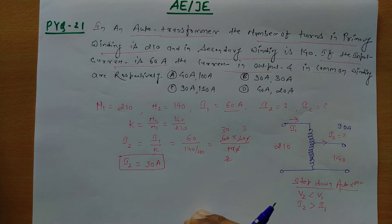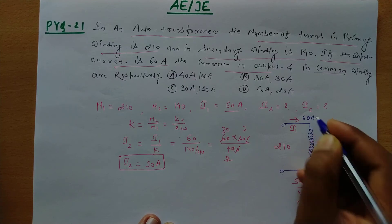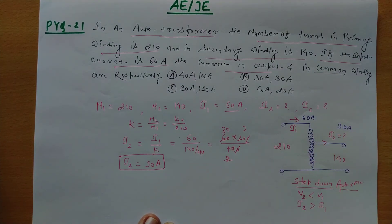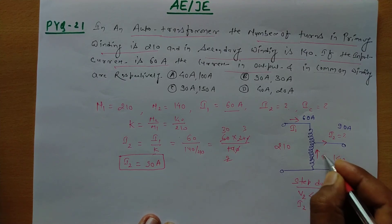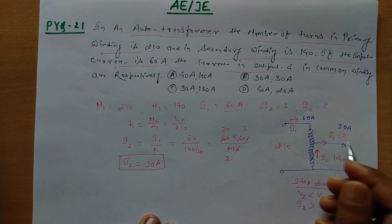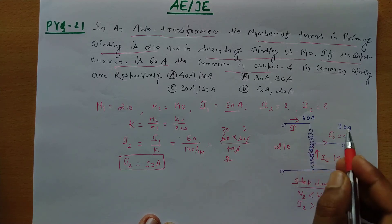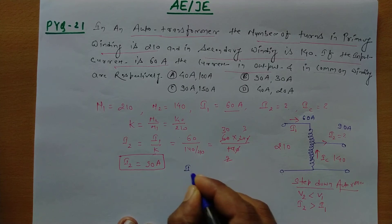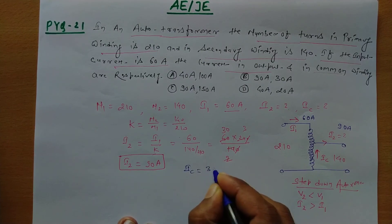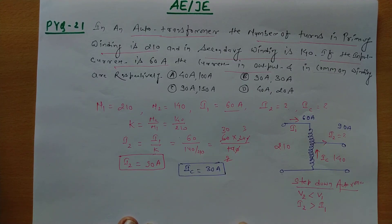Now for the common winding current — applying KCL, the common winding current = I2 − I1 = 90 − 60 = 30 ampere. So the common winding current is 30 ampere.